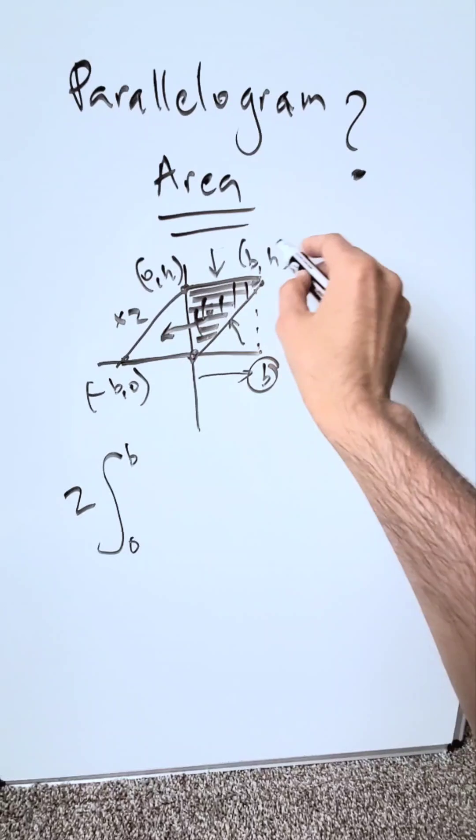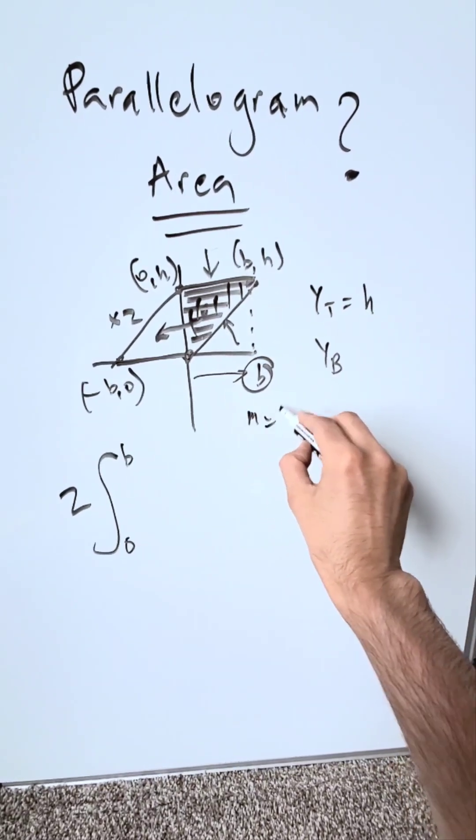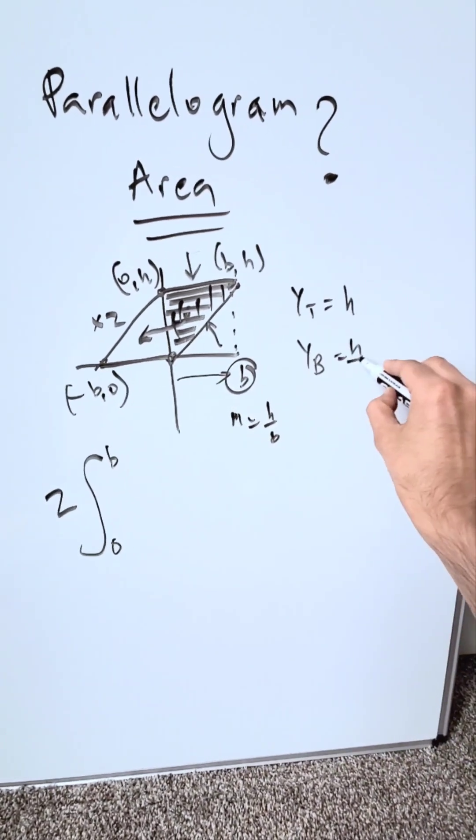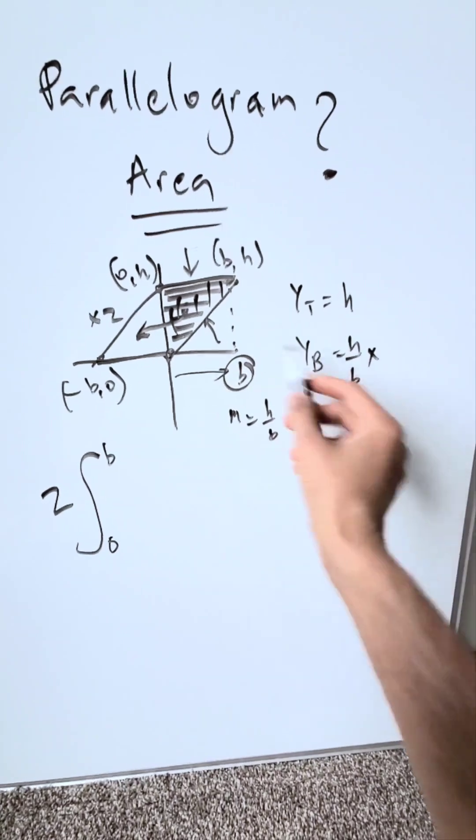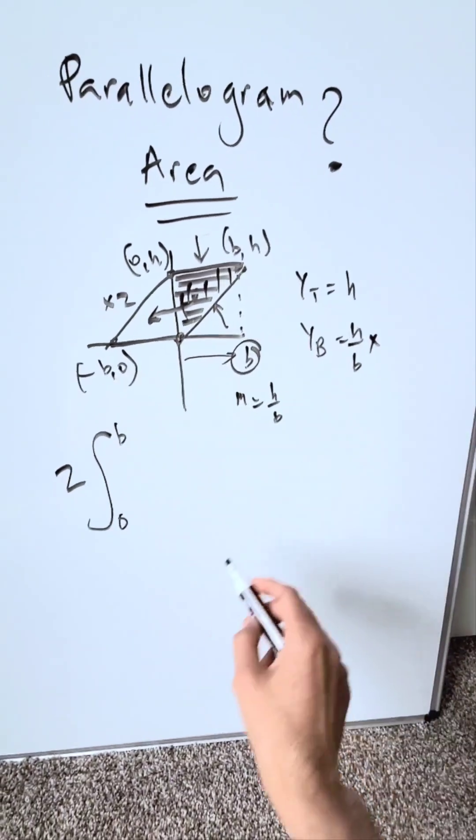From (0,0) to (b,h), you know the slope is h over b. That equation will be (h/b)x because there is no y-intercept—it's the origin. I have this.